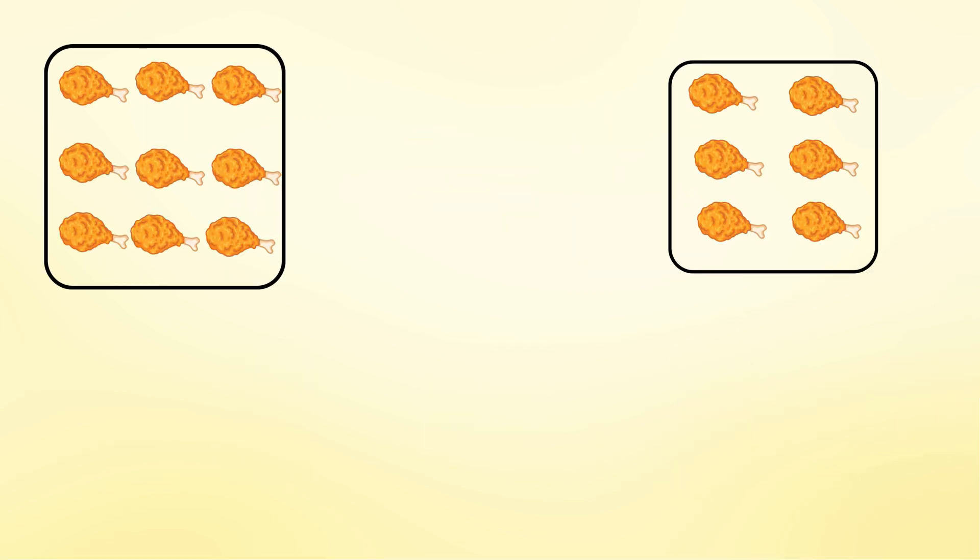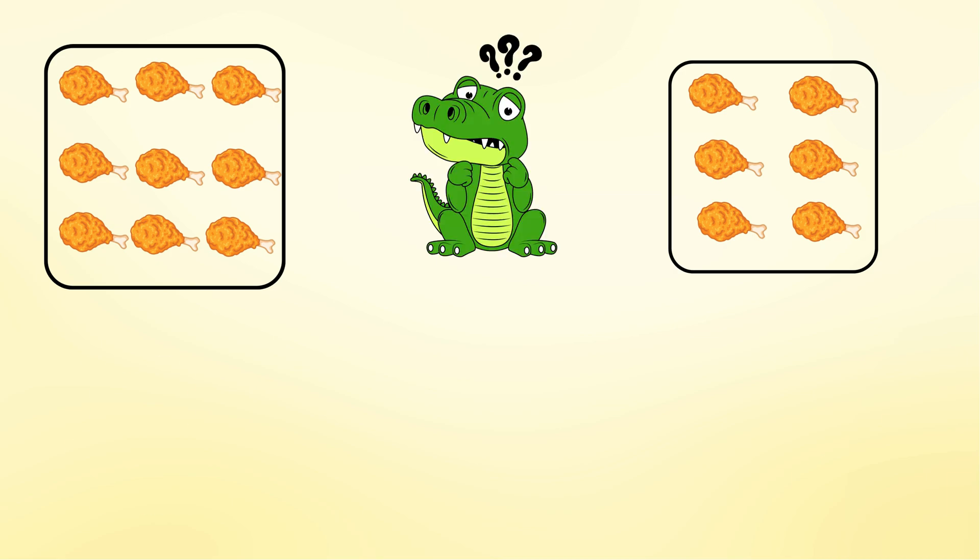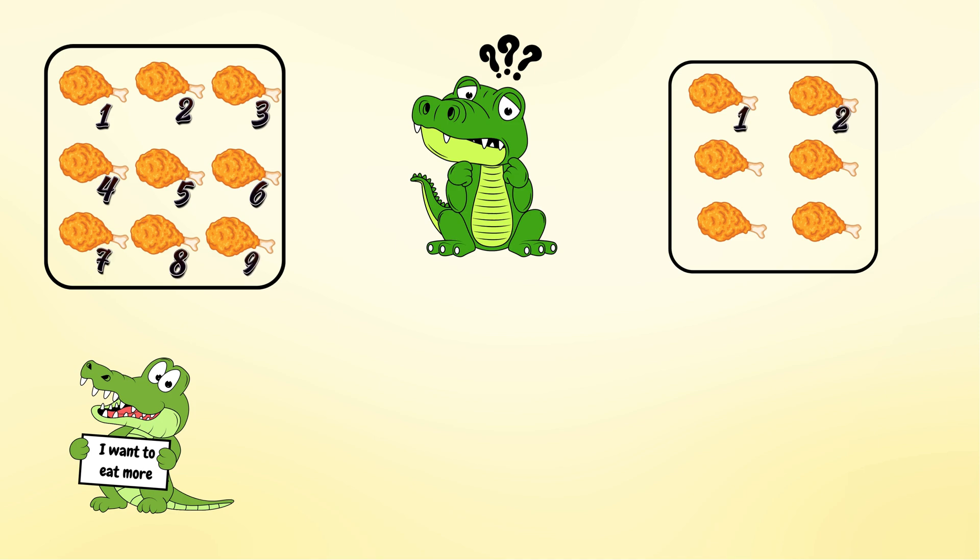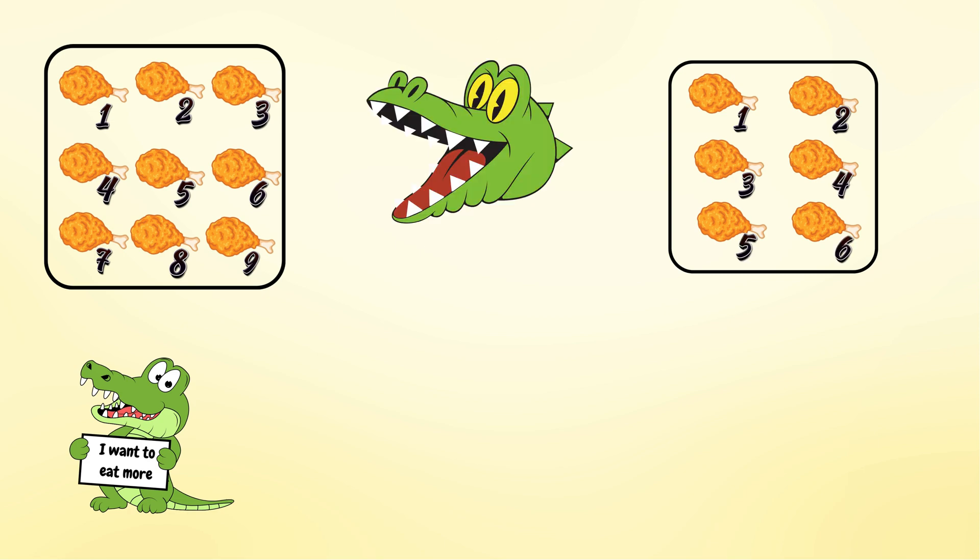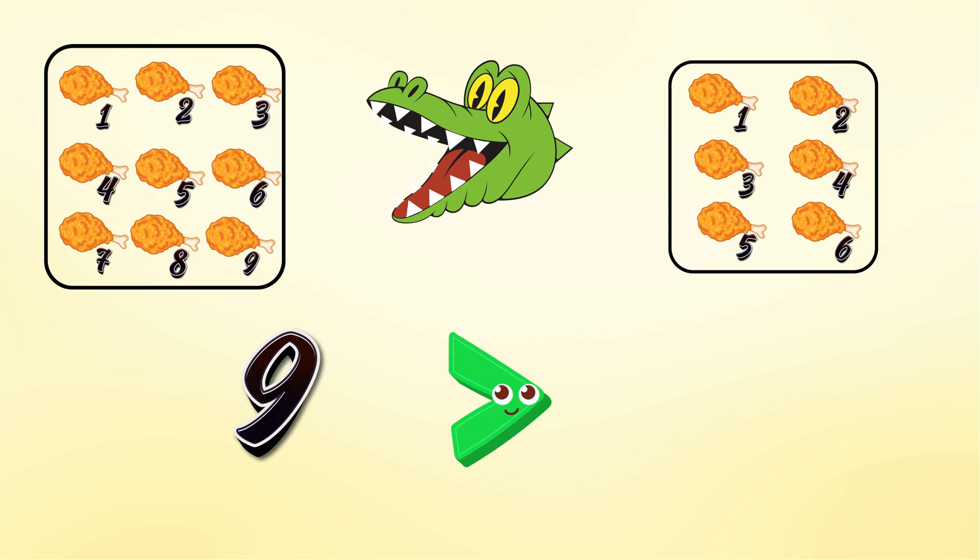We have two boxes of fried chicken. Which one will the crocodile eat? Let's count! 1, 2, 3, 4, 5, 6, 7, 8, 9. 1, 2, 3, 4, 5, 6. So, the crocodile will eat the larger portion. So, 9 is greater than 6.